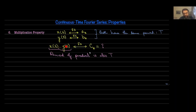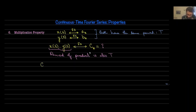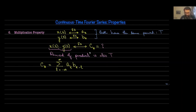You can verify that the period of this product is also going to be exactly the same as the period of X and Y by themselves. The Fourier series coefficients C_k can be shown to be given by the summation from L going from minus infinity to infinity of A_L times B_{K minus L}. That's a result given without proof. You should notice that this is actually the discrete convolution between the Fourier series coefficients.